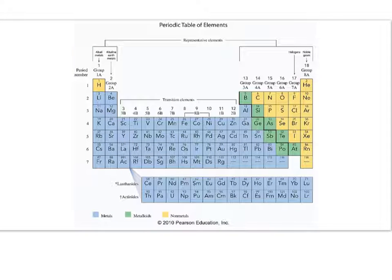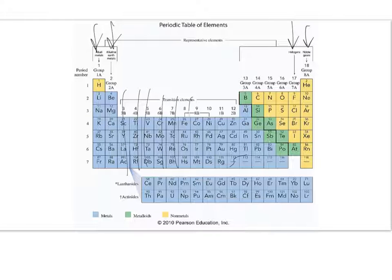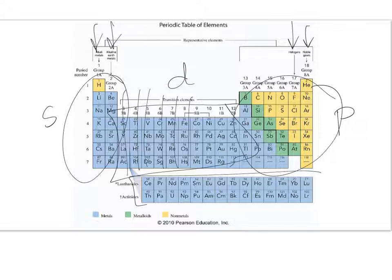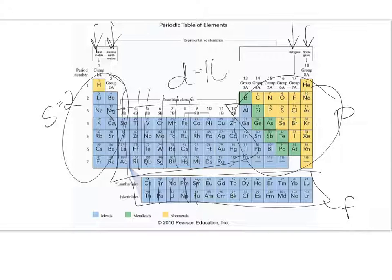Elements in the same columns — called groups — have similar properties. The s-block has two columns, the p-block has six columns, the d-block (transition metals) has ten columns, and the f-block has fourteen columns. Those numbers correspond to the maximum number of electrons in each subshell: s maxes at 2, p at 6, d at 10, and f at 14.